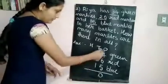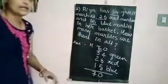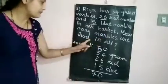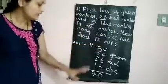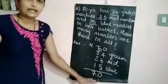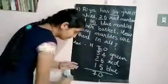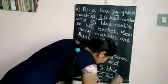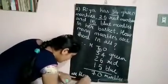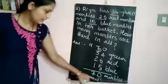Now add the tens column. 1 (carry) plus 3 is 4. 4 plus 2 is 6. 6 plus 1 is 7. So the answer is 70. How many marbles are there in all? There are 70 marbles altogether. Write the answer in a sentence: '70 marbles are there in all.'